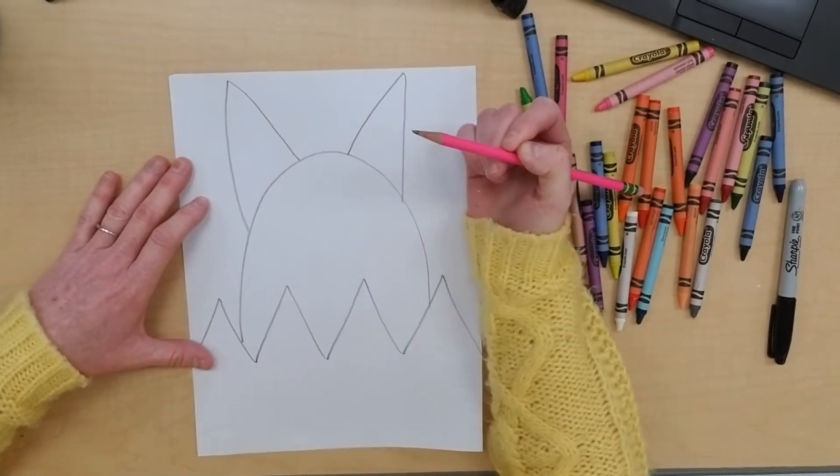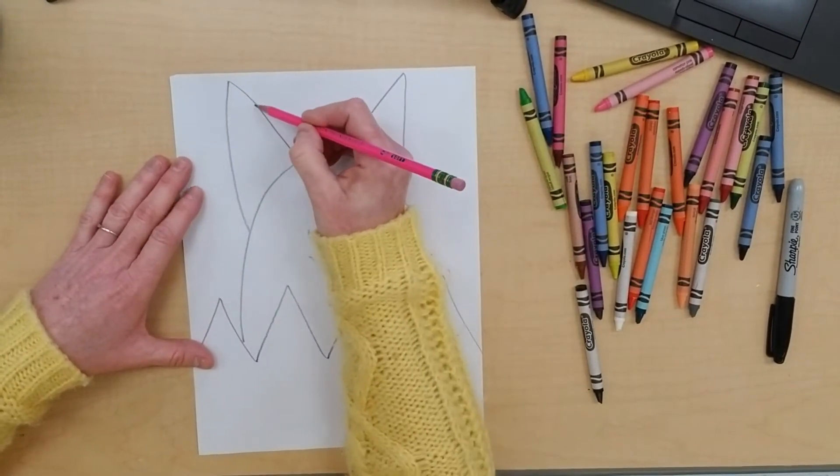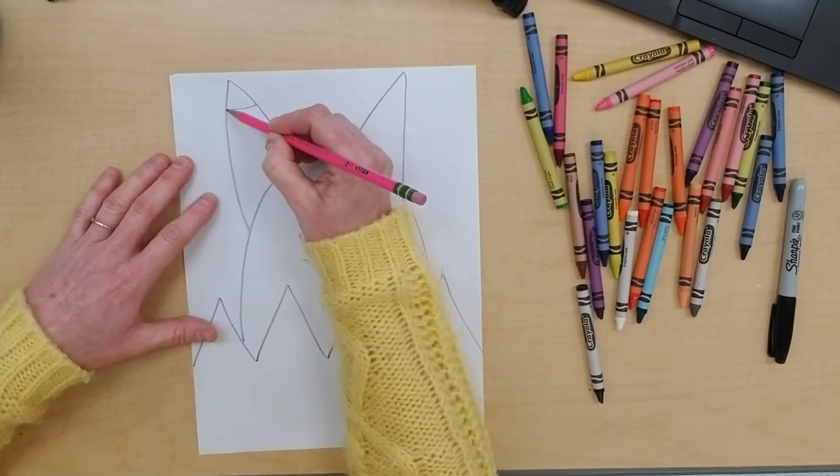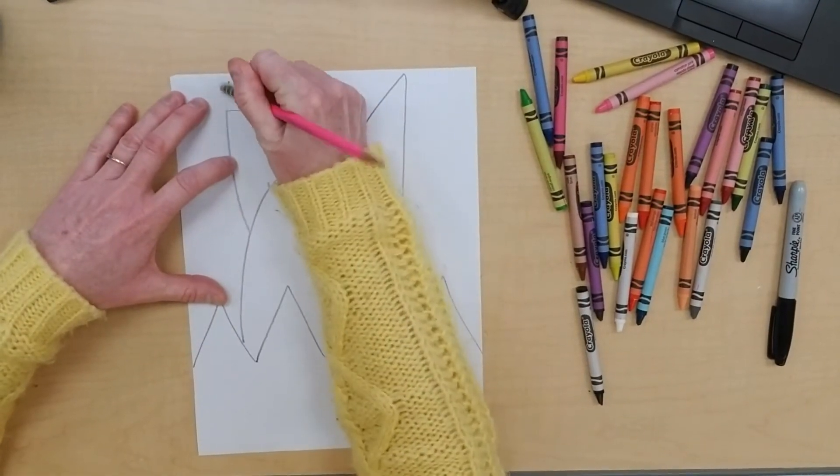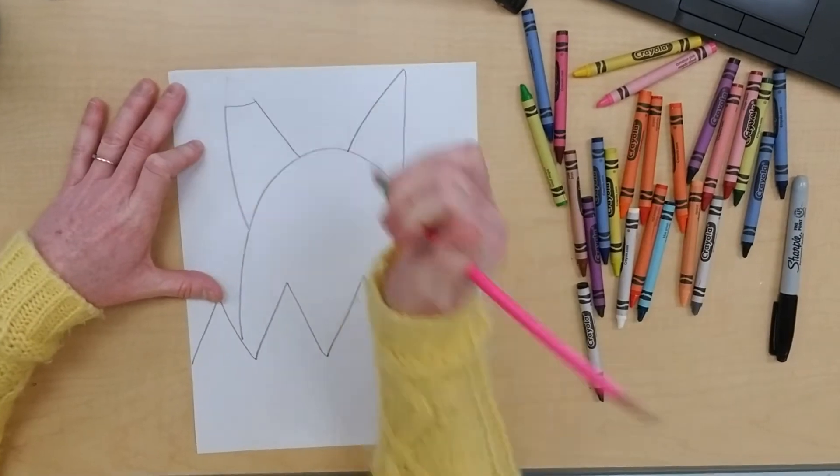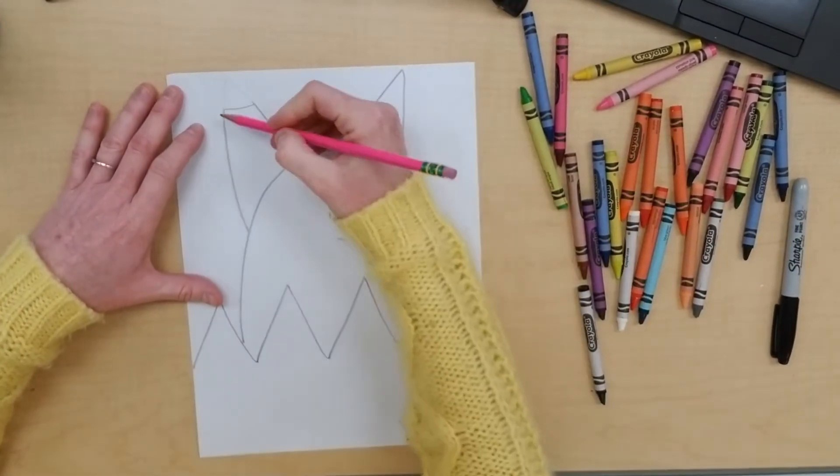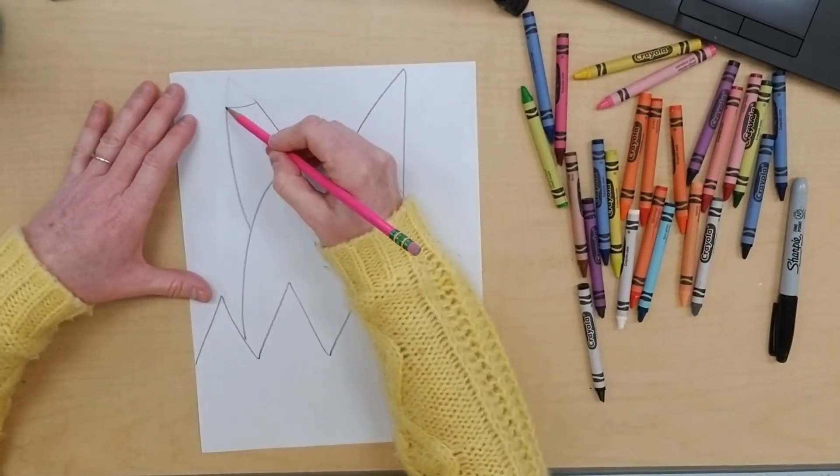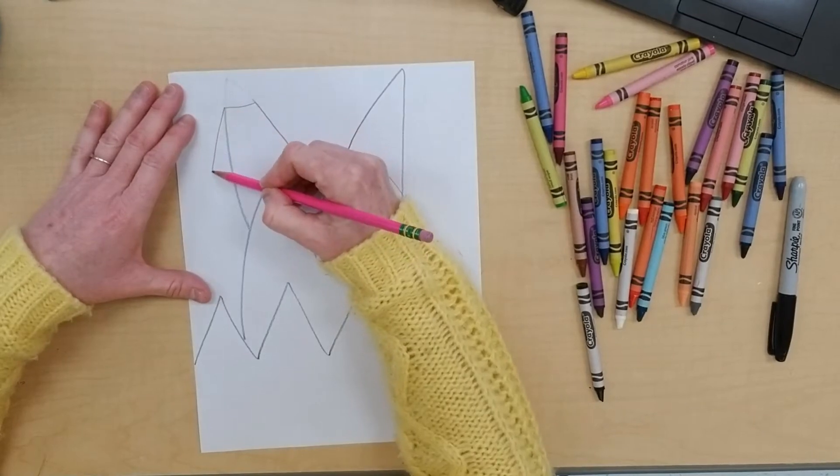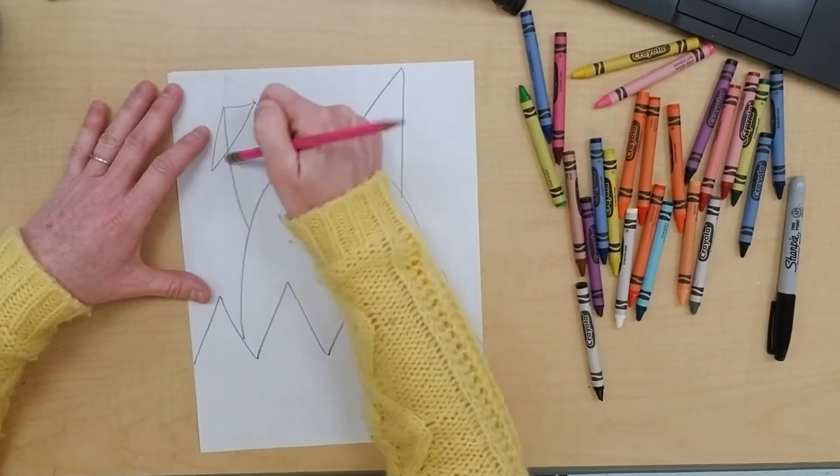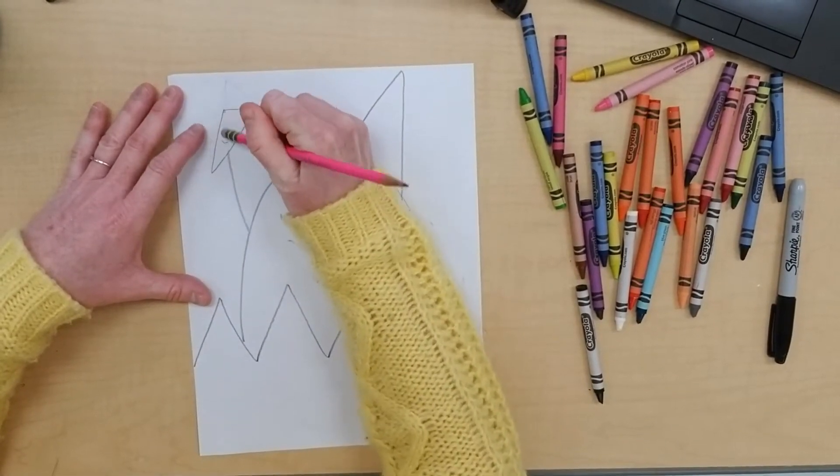Now if you want a fancy folded ear, you're going to draw a straight line right here and erase the top of that triangle. And now we're going to do an upside down triangle so it looks like the ear is folded over. So I'm going to go down and back up, and then you just want to erase that part right there.